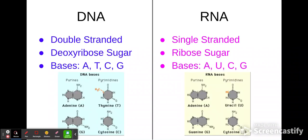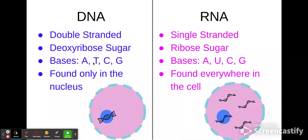They also have different base letters. DNA has A's, T's, C's, and G's. RNA does not have a T — RNA has a U instead, the uracil base. Because T matches with A, U is also going to match with A. Finally, where they're found is different: DNA is found only in the nucleus and can't leave, while RNA is found everywhere — it can go in the nucleus or be found in other places.